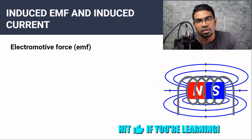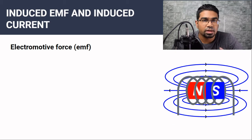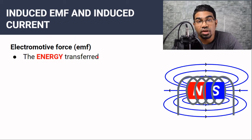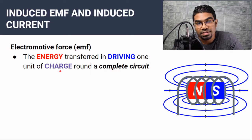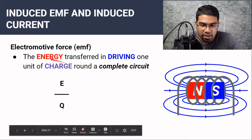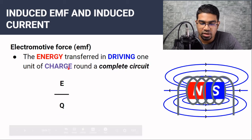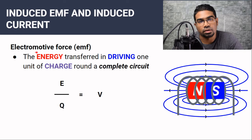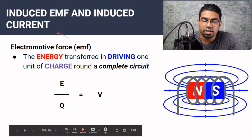When there is a changing magnetic field in a conductor, or changing magnetic flux, then we have induced EMF, which then induces current. EMF is electromotive force. However, it is not a force. Electromotive force is actually the energy transferred in driving one unit of charge — in this case electrons — around a complete circuit. It is the energy transferred per unit charge: energy over charge. You may be familiar with this as voltage. Electromotive force, or EMF, is indeed a type of voltage. It is not a force.